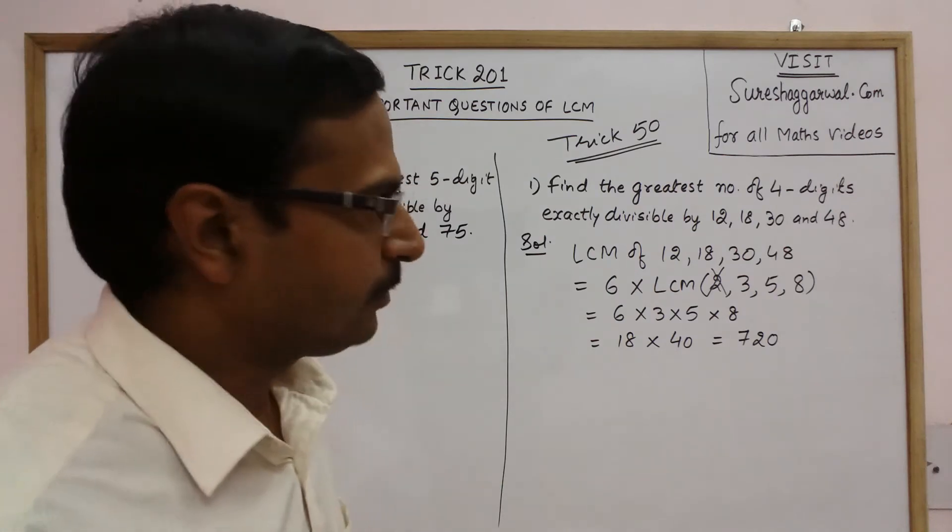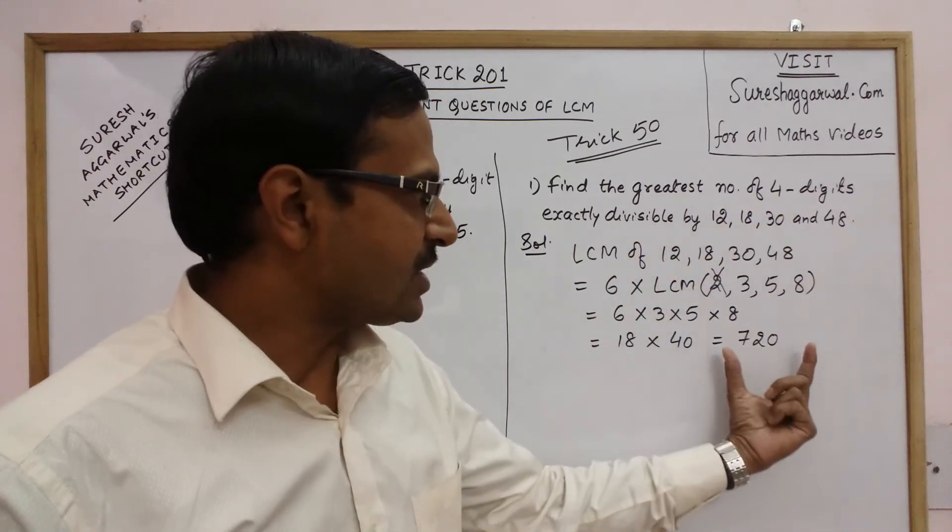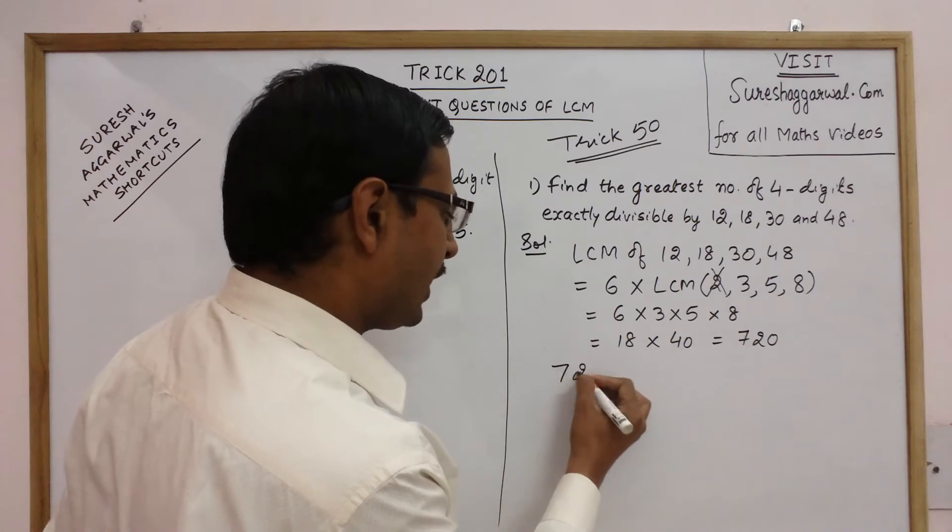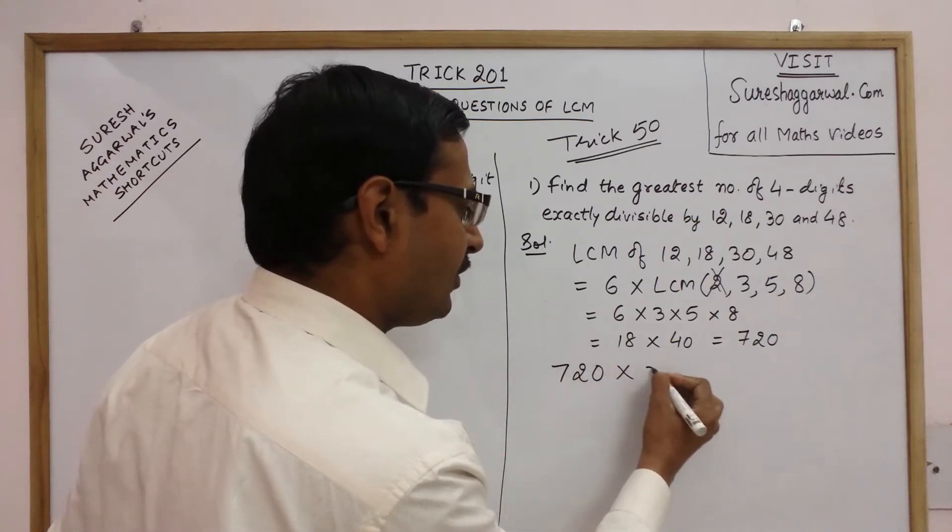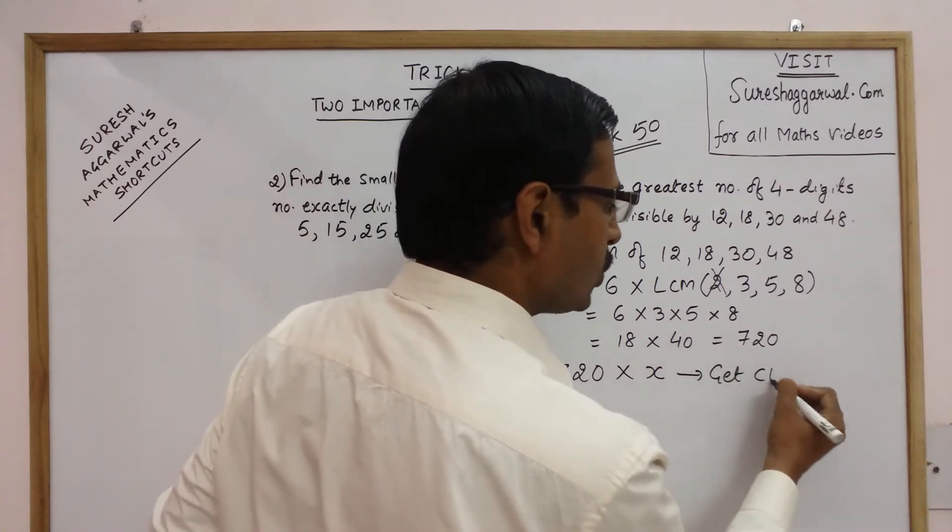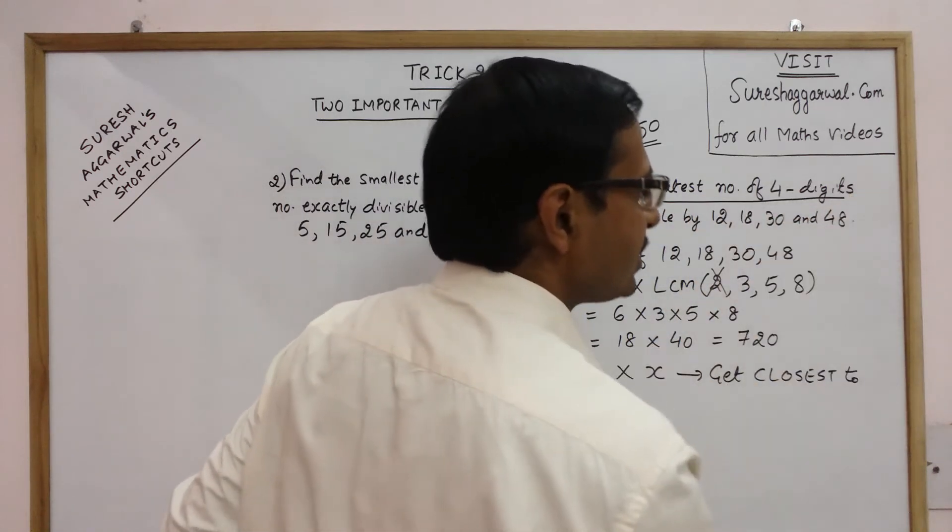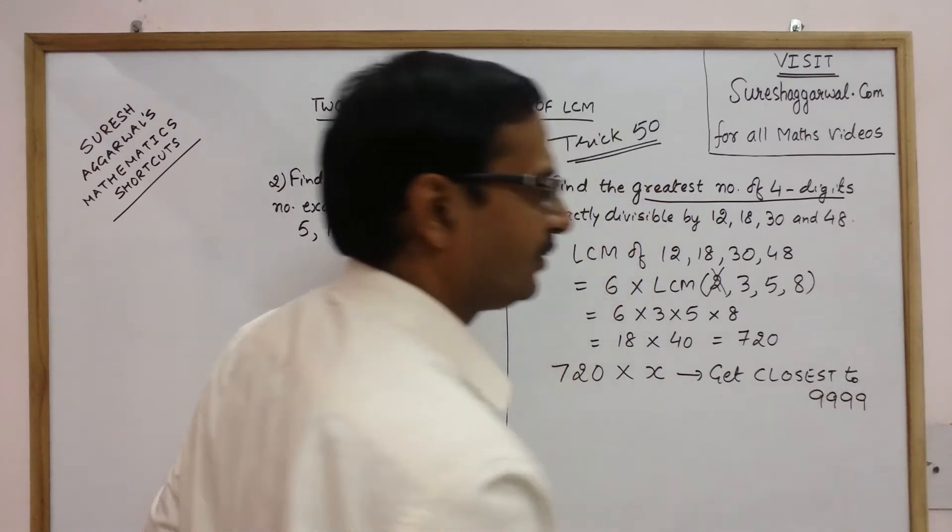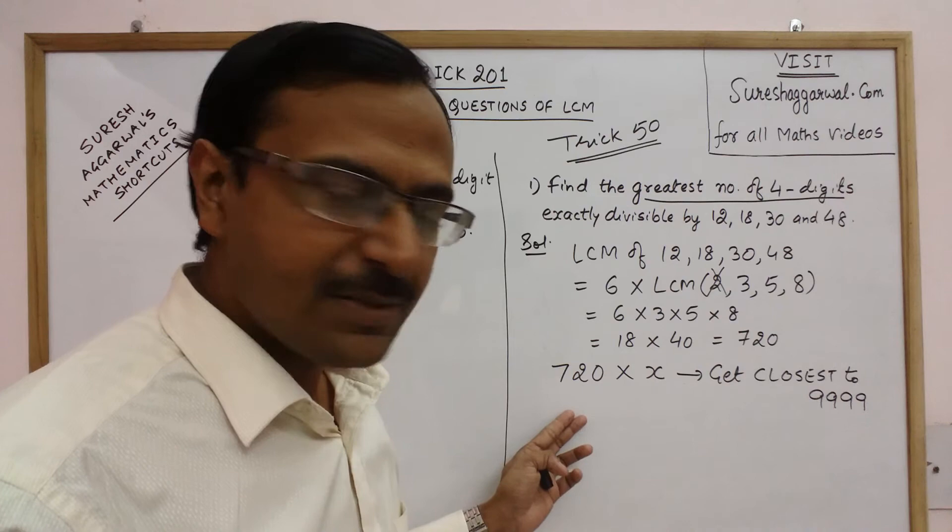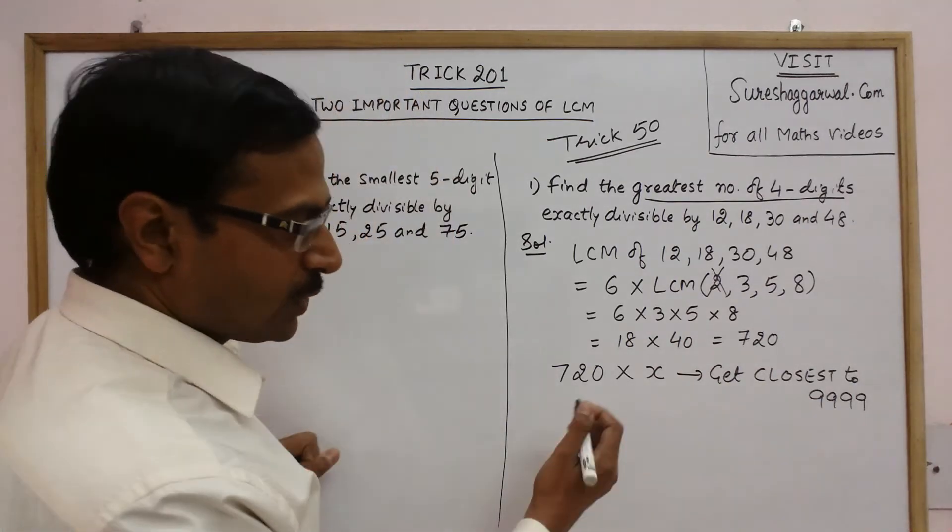Now the final step for finding the answer, that is the greatest number of four digits exactly divisible by 12, 18, 30 and 48, just concentrate on this LCM 720 and we need to find by which number we need to multiply this 720 in order to get closest to the greatest number of four digits, that is 9999.